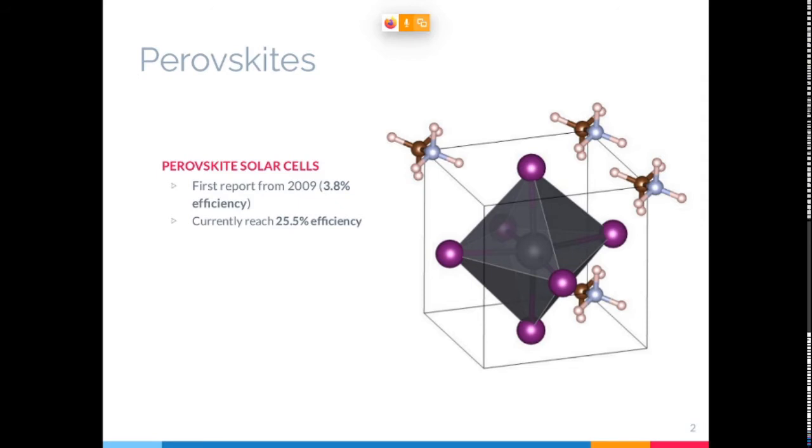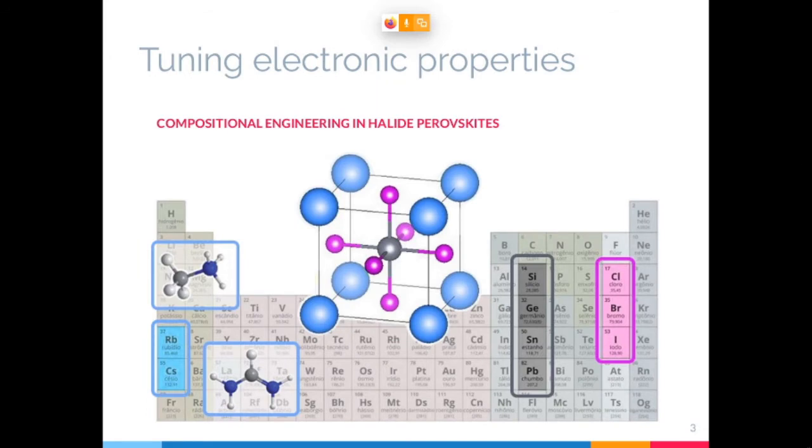But on the other hand, perovskite solar cells are not too resistant because they suffer from oxidation, moisture, and high temperatures. So one possible path for improving these qualities is to investigate different compositions of perovskites, alternative compositions to see if they have good optical properties and still be resistant.